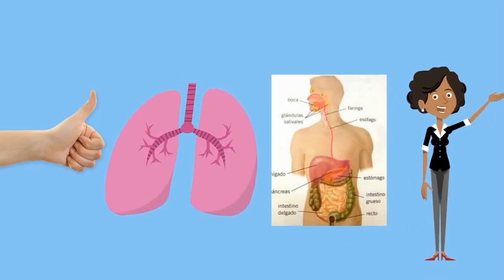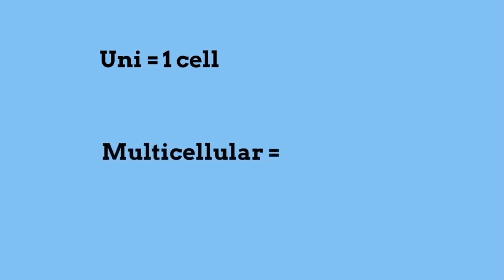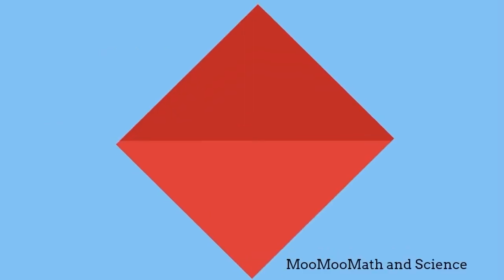So in summary, unicellular organisms have one cell. Multicellular organisms have two or more.